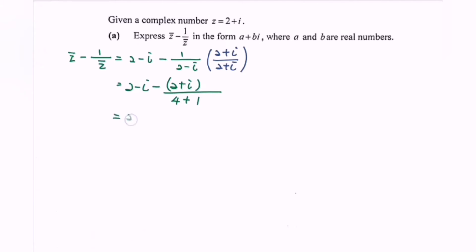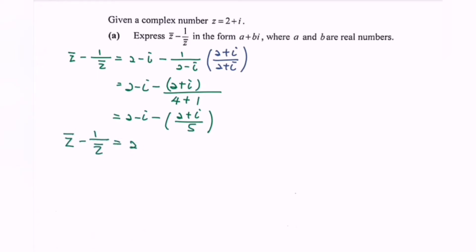Simplify the expression: 2 minus i minus bracket 2 plus i, over 5. Expanding, the conjugate of z minus 1 over conjugate of z equals 2 minus 2 over 5, minus i minus i over 5.